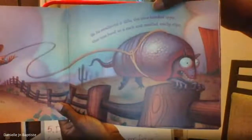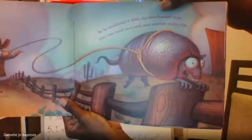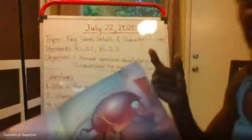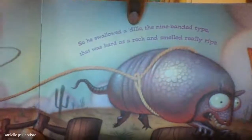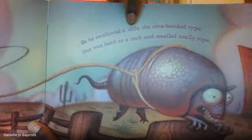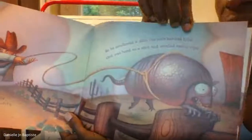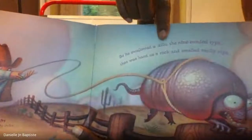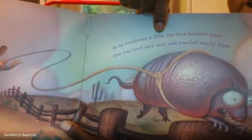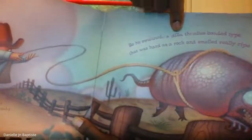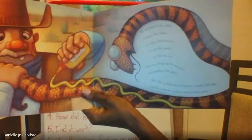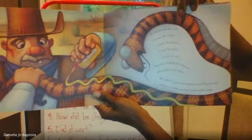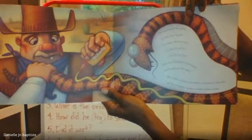So he swallowed a dillo — the nine-banded type — that was hard as a rock and smelled right mighty ripe. In other words, that dillo stunk. And a dillo, as you can see in this book, they wrote 'dillo' but it stands for armadillo. So they're using slang words — words that we can use when we're at home or out in public, but not words that we would write in our papers, not for school. So it's armadillo. He swallowed the dillo to scare the lizard, to chase the road runner, to eat the spider, to bite the ant that was stinging his stomach and making him pant.